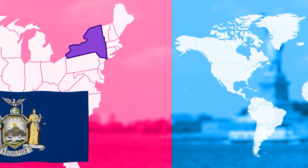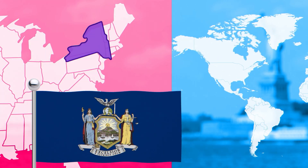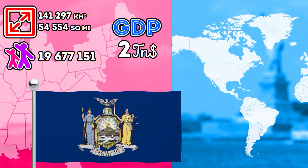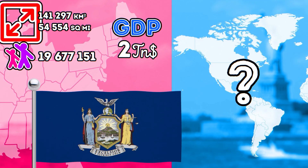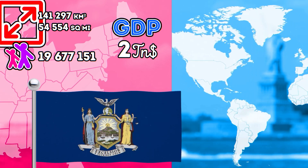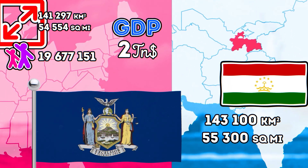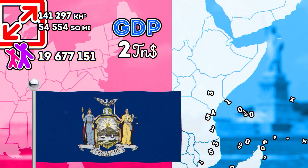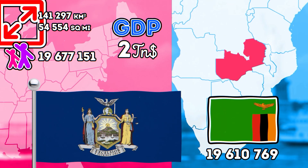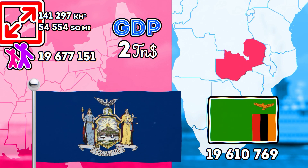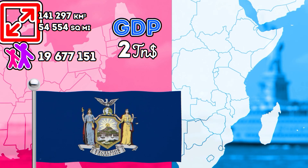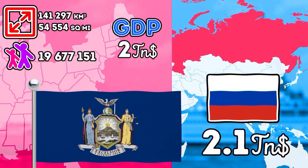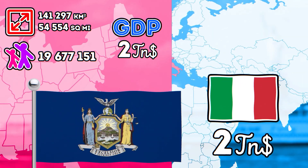Let's start with New York State. This state ranks fourth in population and third in GDP of all U.S. states. What countries does New York State look like? It's slightly smaller than Tajikistan in Asia. The population is almost the same as in Zambia. But in terms of GDP, it's one of the largest economies in the world, along with Russia and Italy.